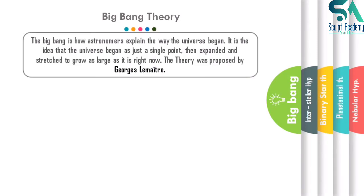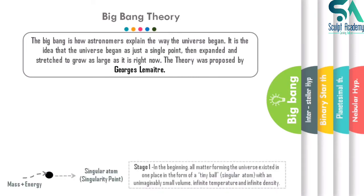George Lemaître stated that the Big Bang is how astronomers explain the way the universe began. It is the idea that the universe began as a single point, then expanded and stretched to grow as large as it is now. Stage one of the Big Bang: in the beginning, all the matter forming the universe existed in one place in the form of a tiny ball known as the singularity point, with an unimaginably small volume and infinite temperature and density.